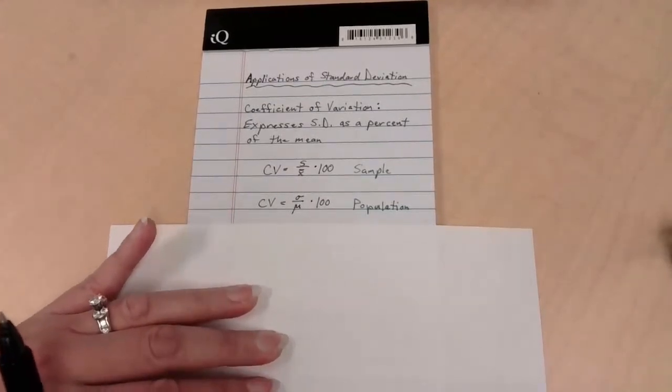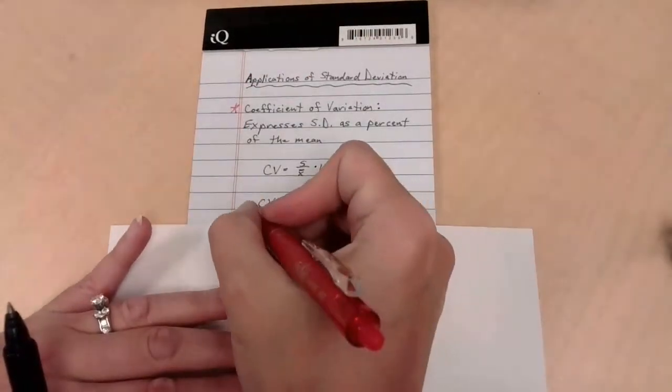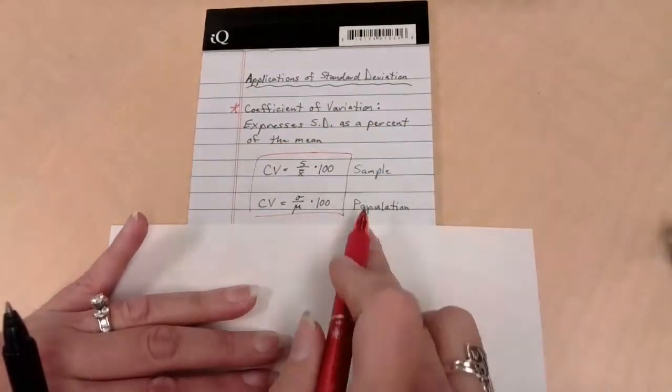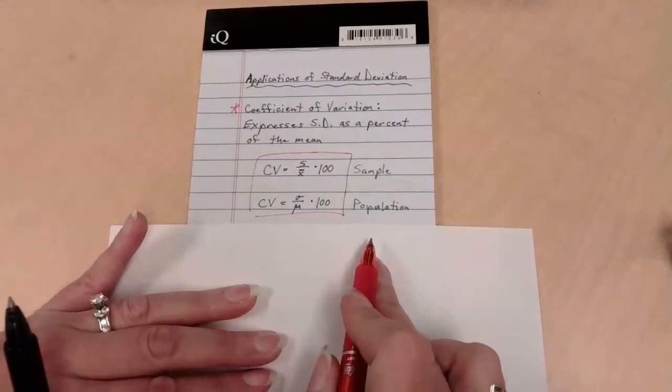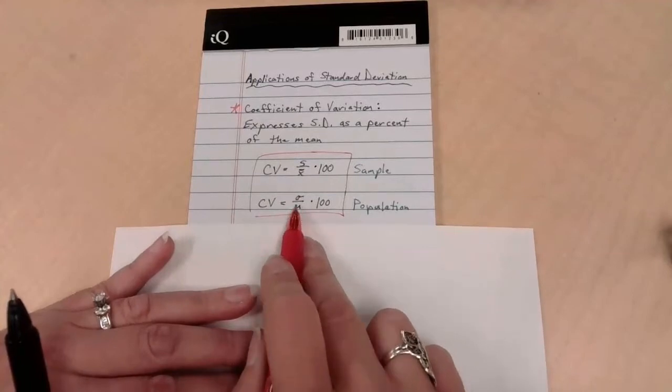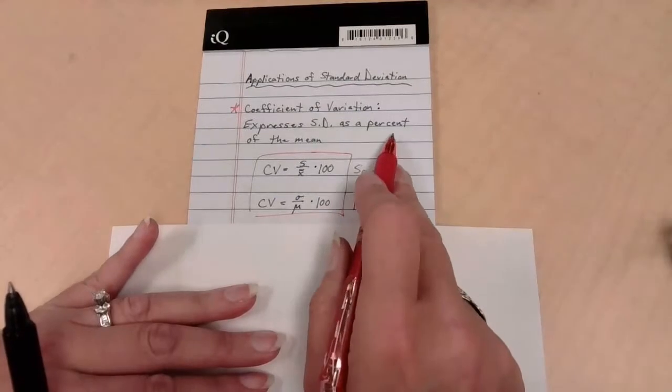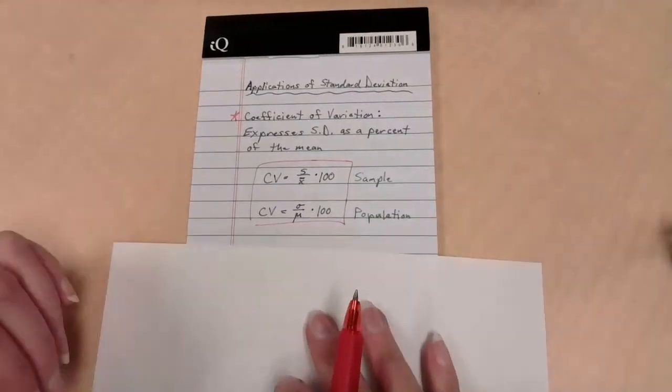If we are discussing coefficient of variation, we've got two formulas. One of them is based on the sample and one of them is based on the population, but they do the exact same thing. When I set a comparison, we can see the ratio: standard deviation over the mean times 100 because it's a percent. So this is going to be a percent of the mean.